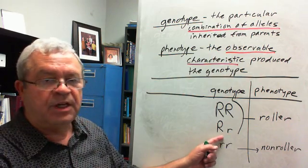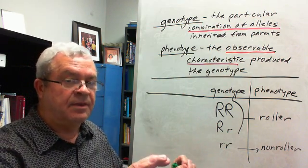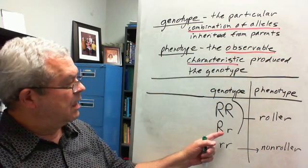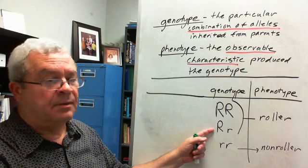Are these different genes? No, they're just different forms of the same gene. And so, the big R is the what allele? The dominant.